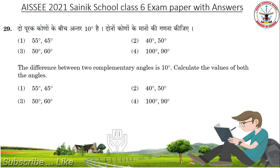The difference between two complementary angles is 10 degrees. Calculate the values of both the angles. Answer is Option 2: 40 degrees and 50 degrees.